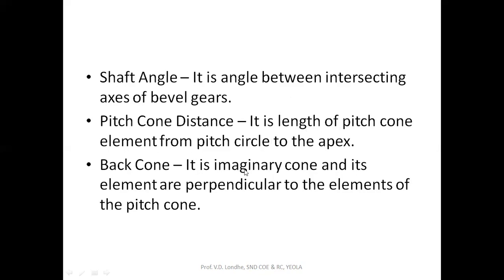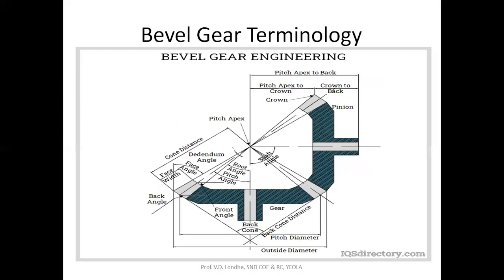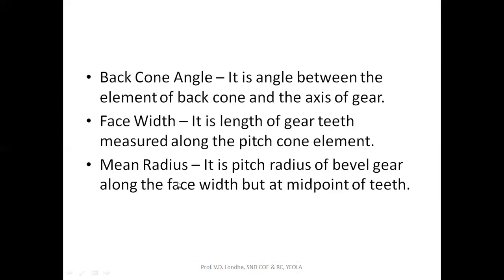The back cone is an imaginary cone on the back side whose elements are all perpendicular to the elements of the pitch cone. The back cone angle is the angle between the element of the back cone and the axis of the gear. Face width is measured along the surface of the tooth, same as in spur gears. Mean radius is the pitch radius of the bevel gear measured at the midpoint of the face width.